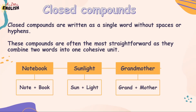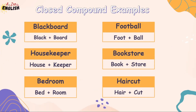For examples: notebook — a combination of note plus book; sunlight — sun plus light; grandmother — grand plus mother. Other examples include blackboard, football, housekeeper, bookstore, bedroom, and haircut. There are many more examples of closed compound words.